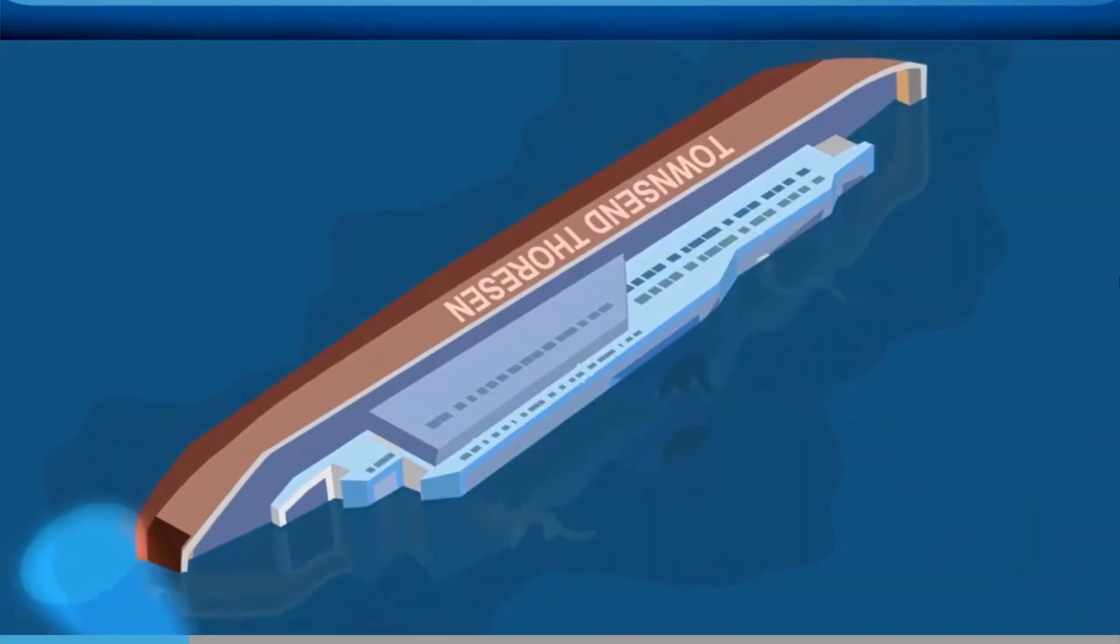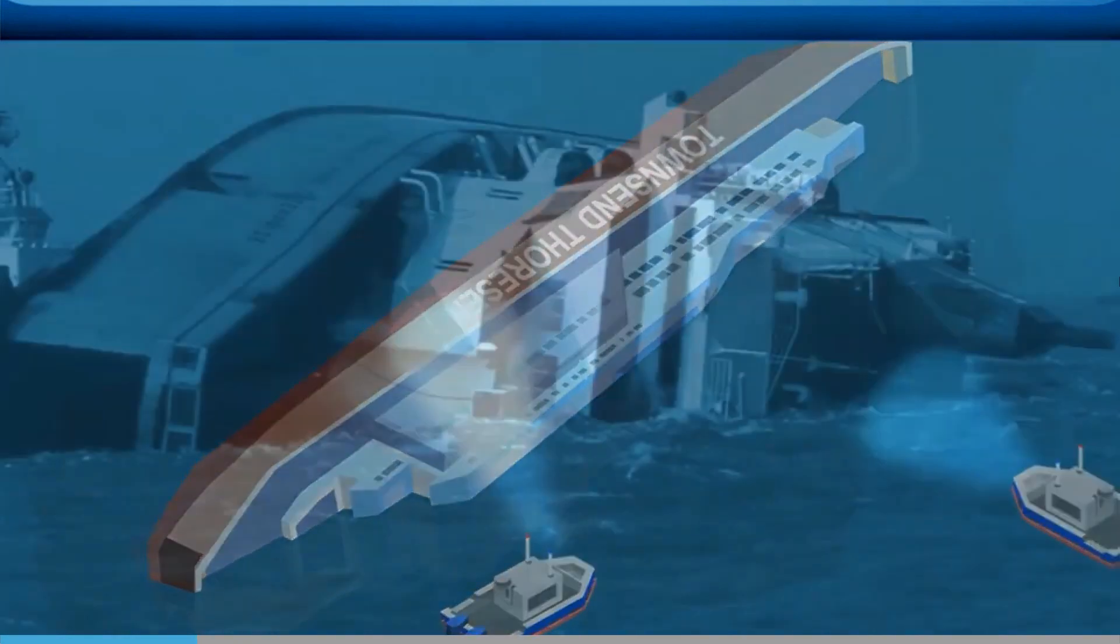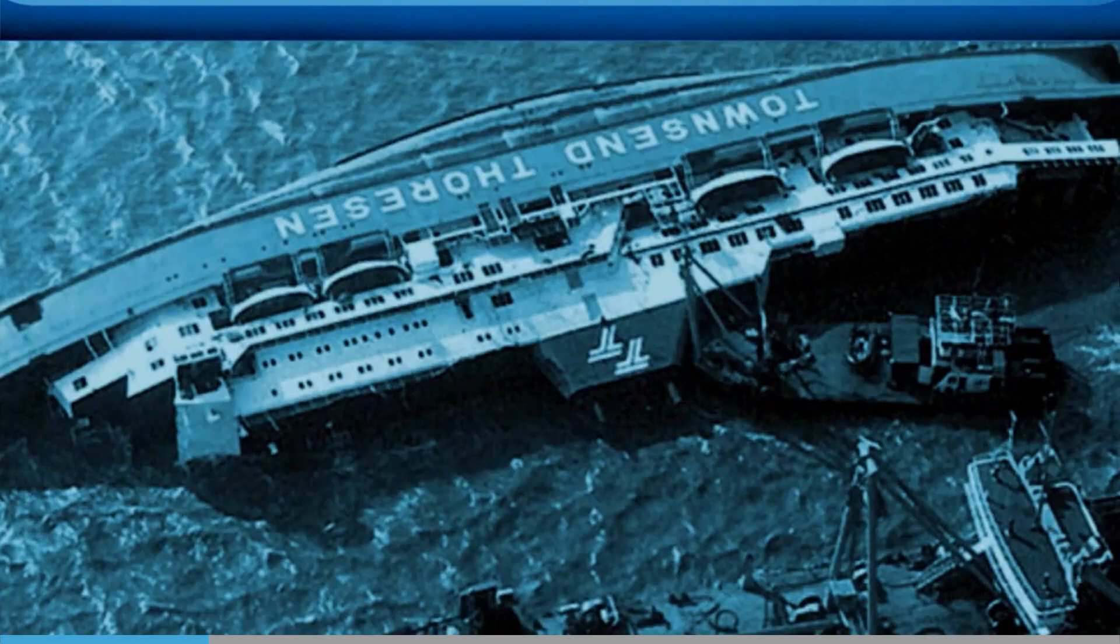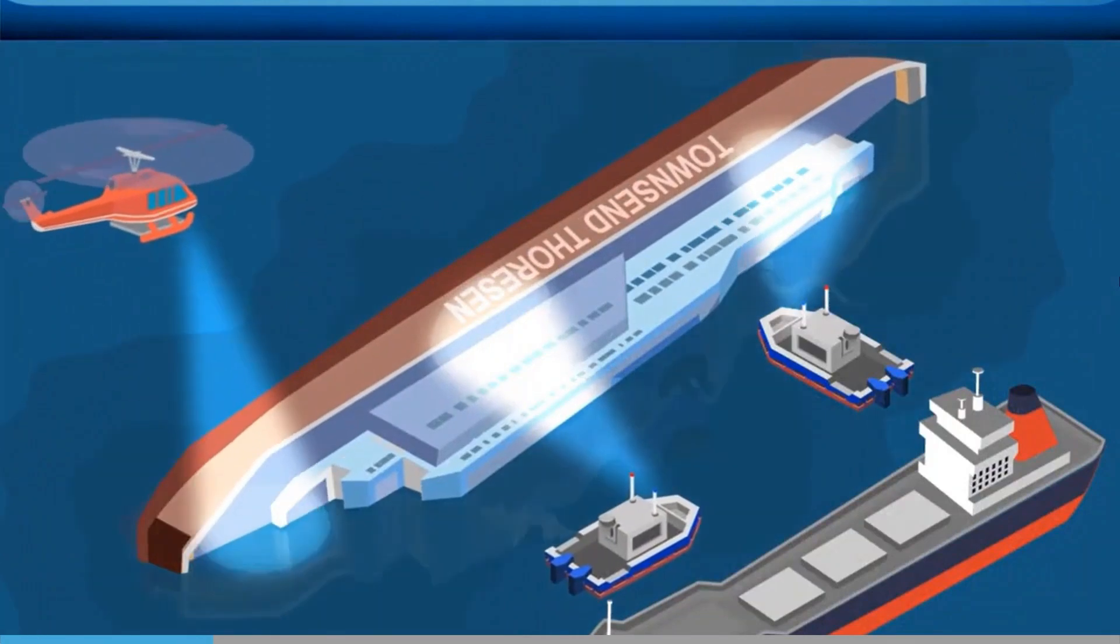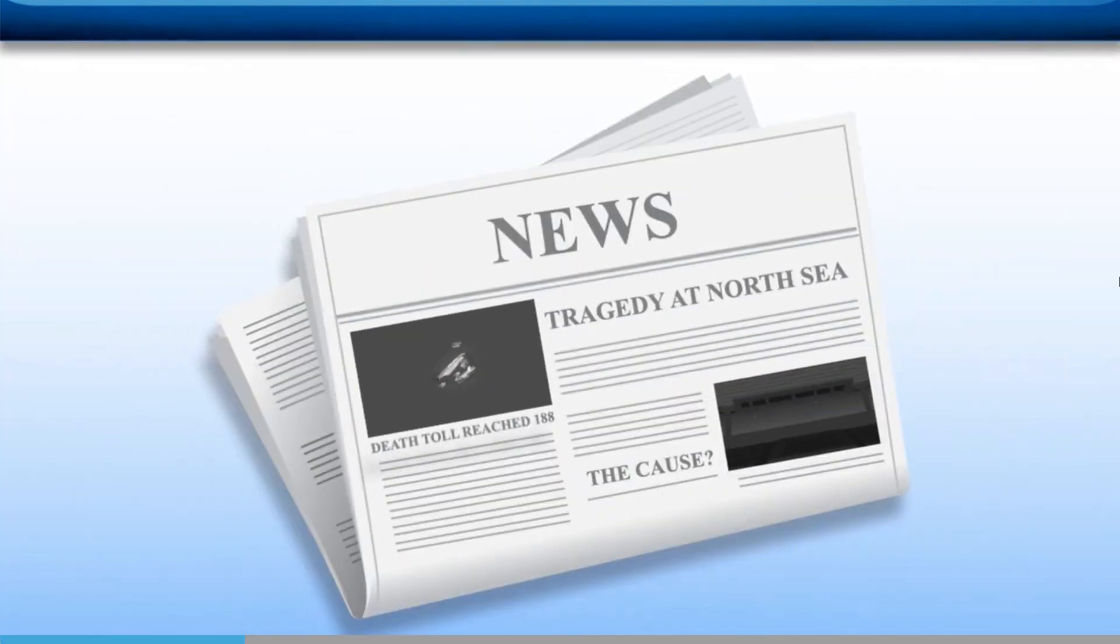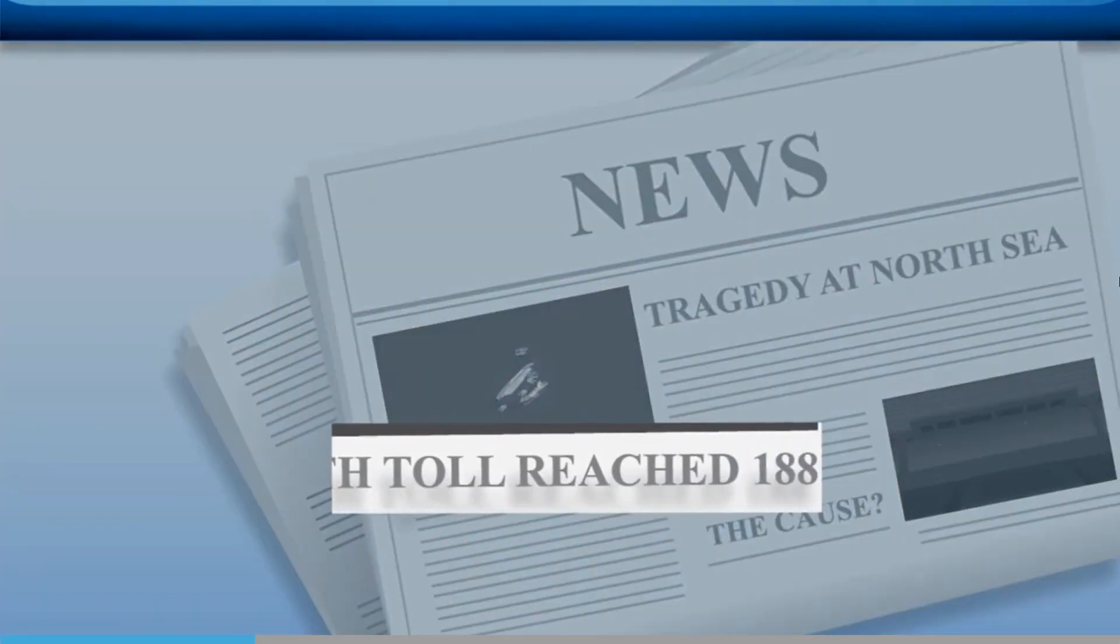Nearby boats noticed the stranded vessel and immediately called for help. But the ship was on the edge of a sandbank, with the passengers and crew trapped inside. Rescue teams battled with the cold temperatures of the North Sea, attempting to save as many people as possible. They were worried that the ship might dislodge from the sandbank and sink to the bottom at any second. They saved the majority of the passengers, but 188 people died in what was deemed Britain's largest maritime tragedy since the Titanic.